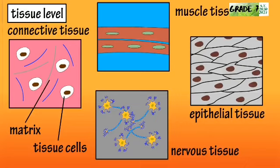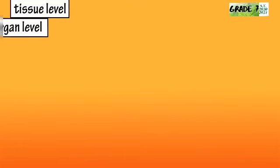Connective tissue, muscle tissue, nervous tissue, and epithelial tissue. Next up is the organ level.